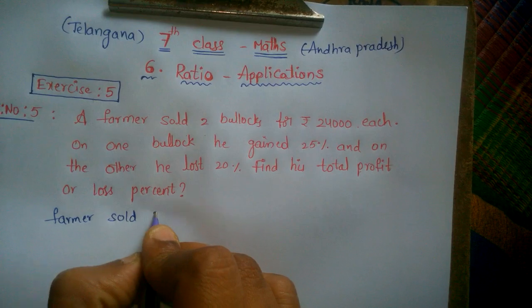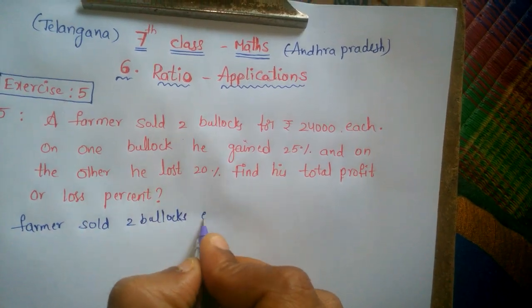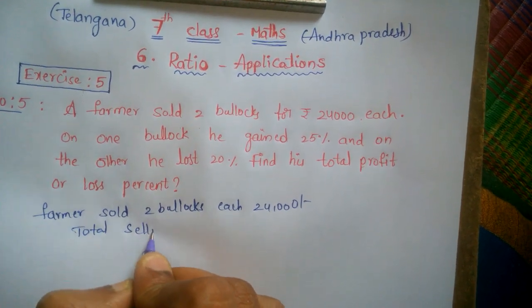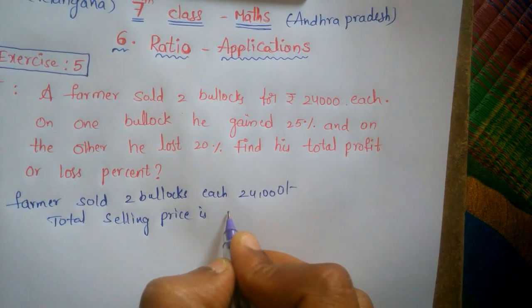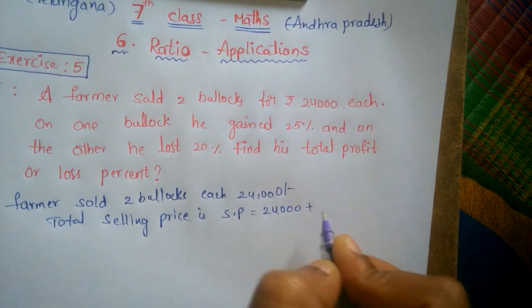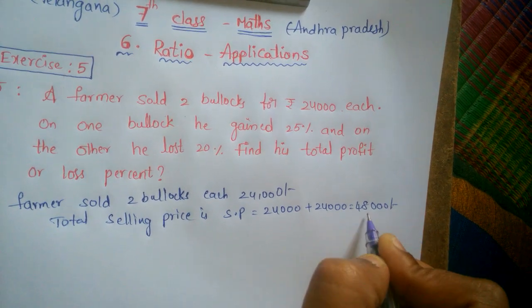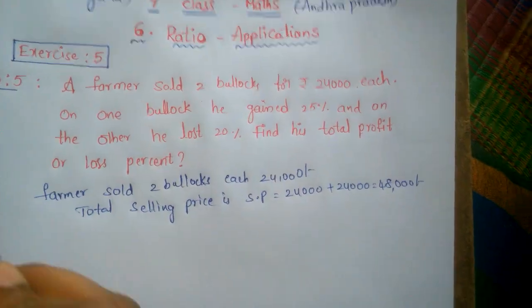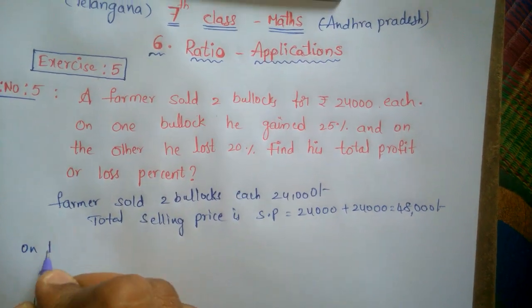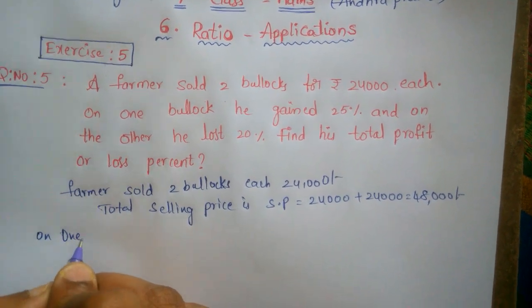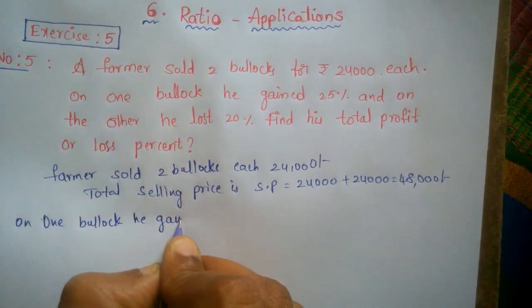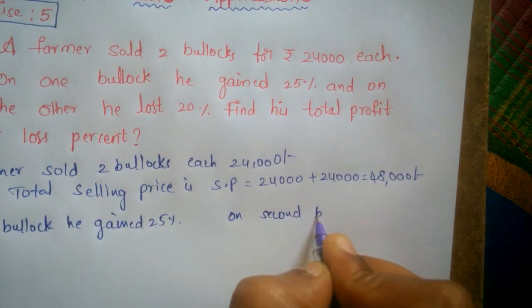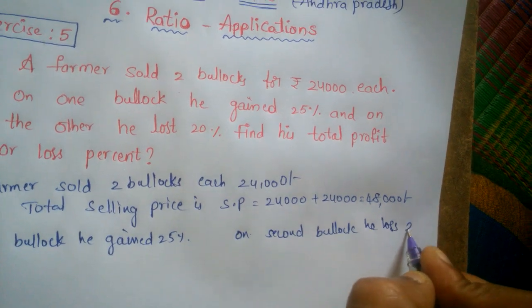The farmer sold two bullocks, each for 24,000 rupees. So the total selling price is 24,000 plus 24,000 equals 48,000. We have to find the cost price first. On the first bullock he gained 25%, and on the second bullock he lost 20%.